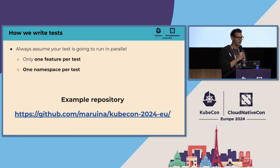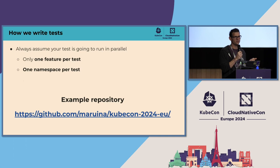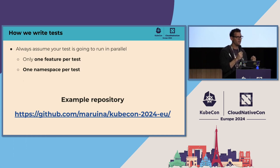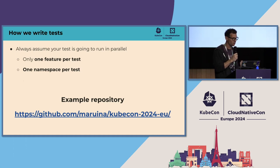We tell our developers to assume all tests are going to run in parallel, so we provide two guidelines. First: only one feature per test. As I mentioned, you can add multiple features to a test, but if you do that, even with parallel testing enabled, the features will run one at a time. Second: run each test in its own namespace. This helps us avoid pollution during tests and makes cleanup easy.